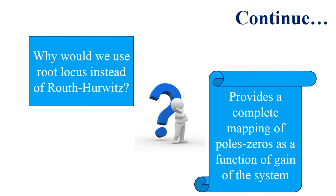We have a question: since we have already studied the Routh-Hurwitz criterion, why would we use root locus instead? The answer is that Routh-Hurwitz criterion is used to determine stability of a system and the gain for which the system becomes unstable. On the other hand, root locus is quite literally the path followed by the poles and zeros of a system. Root locus is superior in that it provides a complete mapping of poles and zeros as a function of gain, allowing you to judge the system response at various gains, stability margins, natural frequency, and damping of the system. Root locus is also used to design controllers for every system.